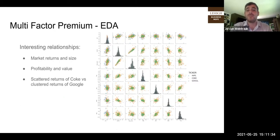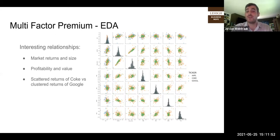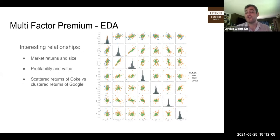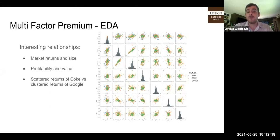This is where we dive into the EDA — the exploratory data analysis. It's a group plot where each factor return is plotted against the others. We want to see a scatterplot of the relationships, but it's important that for the model to work, we don't want to see relationships between our independent variables, since they should be independent of one another. However, looking at market returns versus size, and profitability versus value, you can see a somewhat direct relationship — as market returns increase, the size premium continues, and firms valued at a high premium are typically more profitable.